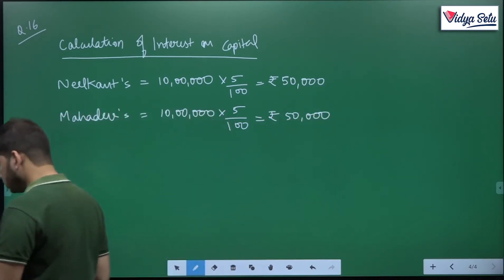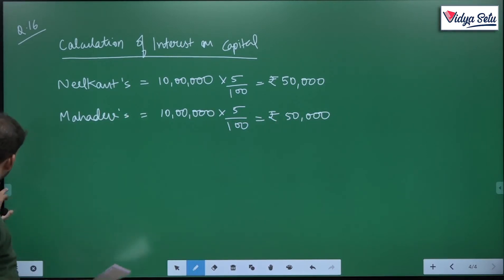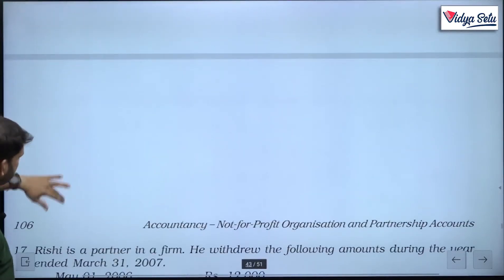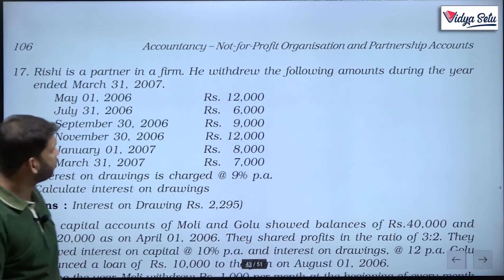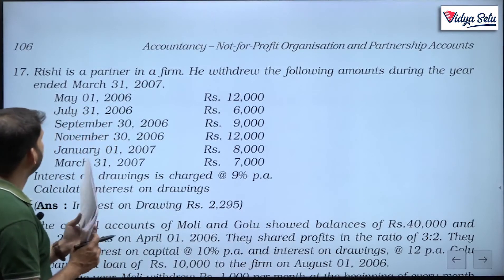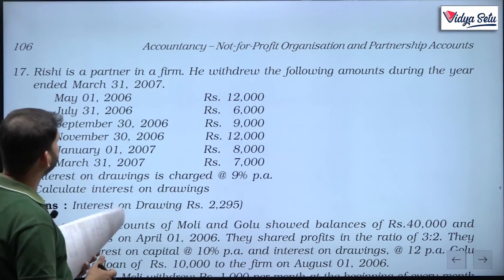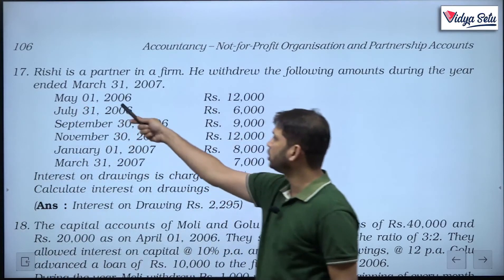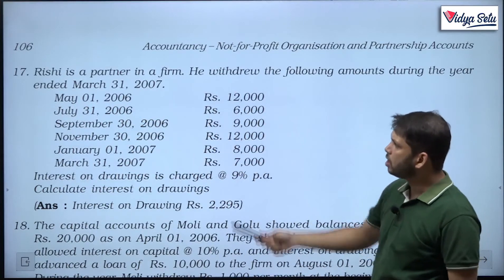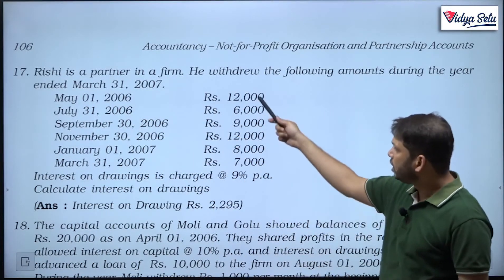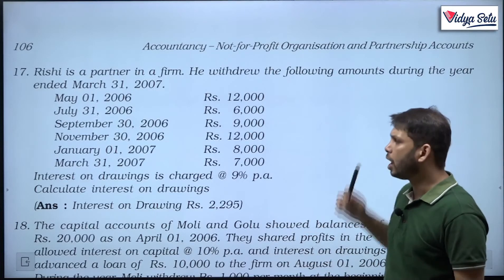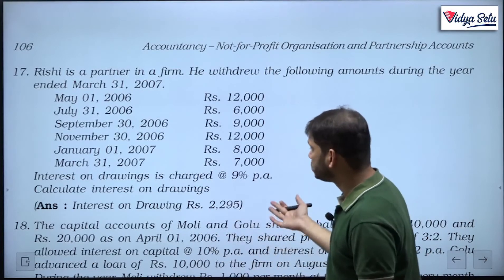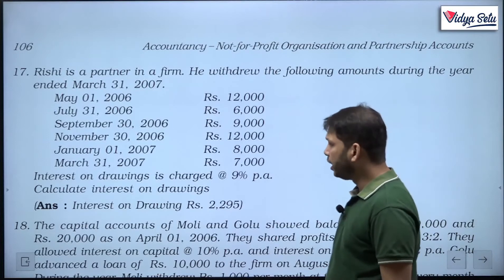A simple question. Let us look at question number 17 now. Rishi is a partner in a firm. He withdrew the following amounts during the year ended 31st March 2007. On May 1, 2006 he withdrew rupees 12,000; on 31st July 2006 he withdrew 6,000; on different dates different amounts have been withdrawn. That is the reason we cannot use the shortcut method. Interest on drawings is charged at 9% per annum. Calculate interest on drawings.